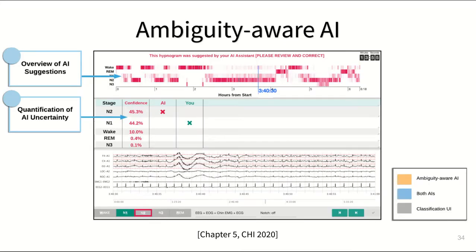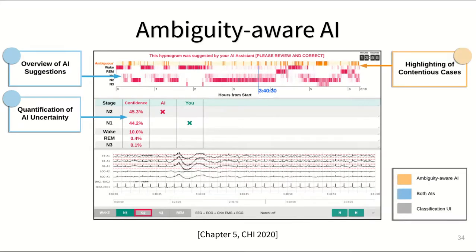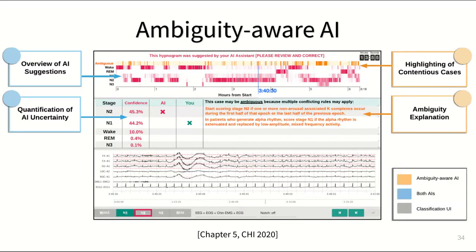What if we had an AI that helps the human by flagging potentially ambiguous cases? And what if the AI could also explain why a case is ambiguous? Would that help the human? Would the collaboration be more effective? Would the human trust the AI more?